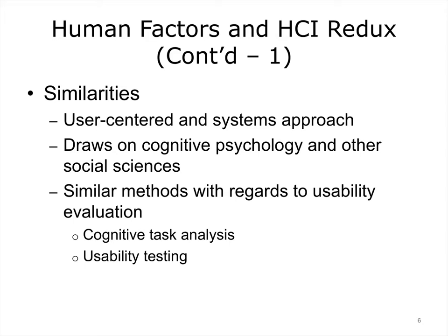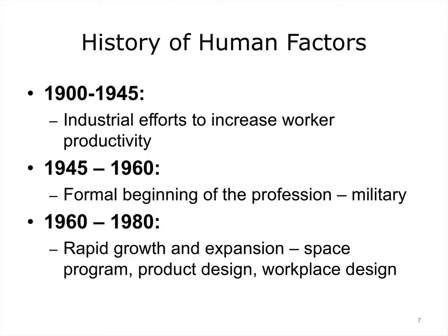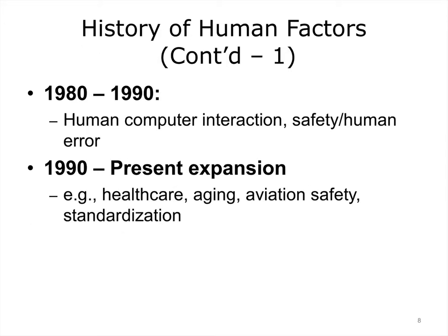Researchers and professionals in both domains draw on the same set of theories, including cognitive engineering. This slide covers the history of human factors, from the earliest efforts of engineers to increase the productivity of factory workers by changing environmental conditions. The discipline became formalized towards the end of World War II, and shortly thereafter began an age of great expansion. This time corresponded to the beginning of the space age and the rapid growth of the automobile industry, as well as aviation. The last 20 to 30 years have witnessed a considerable growth of the discipline in scope and importance.